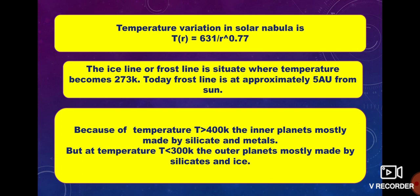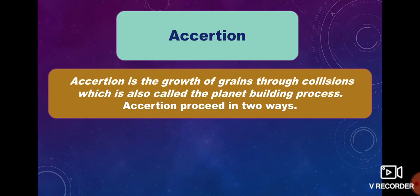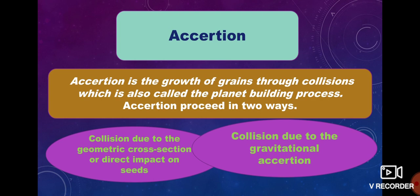The inner planets are mostly made of silicates and rocky materials. At temperatures below 30 Kelvin, the outer planets are mostly made of silicates and ice. Accretion is the growth of grains through collisions, also called the planet-building process. Accretion proceeds in two ways: first, collision due to geometric cross-section or direct impact on seeds; and second, collision due to gravitational accretion.